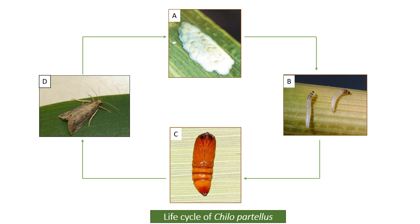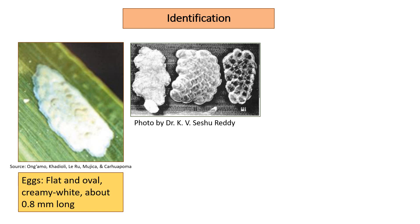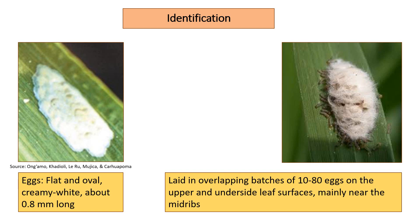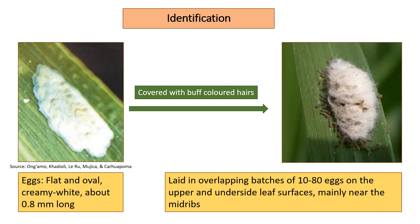The life cycle of Chilo partellus has four main stages, namely egg, larva, pupa, and adult. Eggs are flat and oval, creamy white, and about 0.8 mm long. They are laid in overlapping batches of 10 to 80 eggs on the upper and underside leaf surfaces, mainly near the mid-ribs.